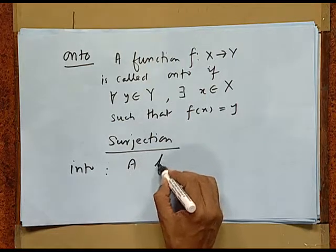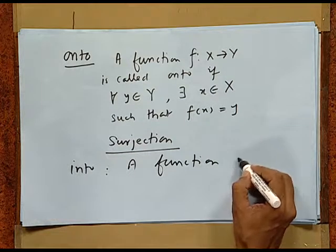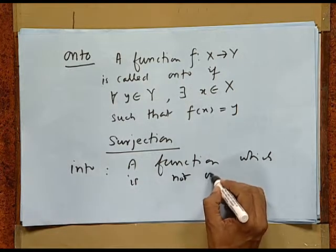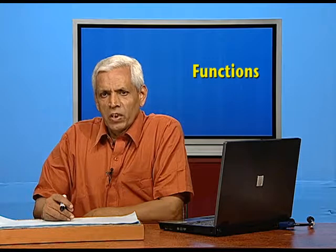Surjection is another name for onto function. For into function, we don't give any definition. Simply we say any function which is not onto is called into function. In a problem, when we have to prove a function is into, we only need to show an example of an element whose preimage is not there. Whereas, to prove a function to be onto, we have to use the definition.